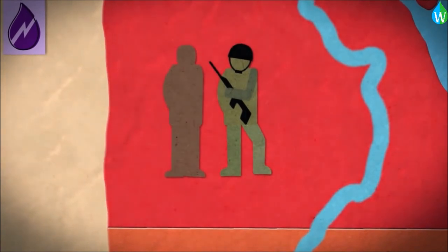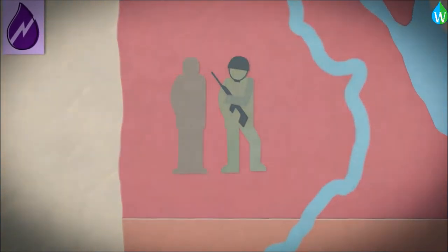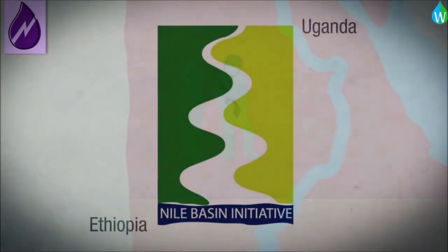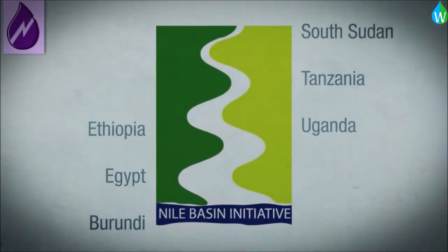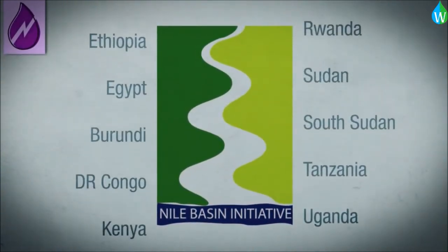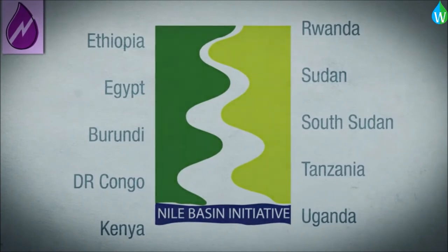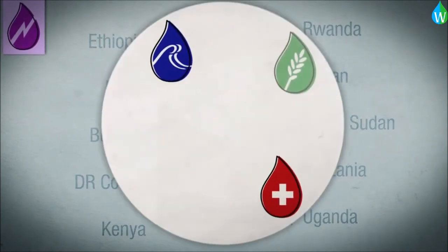However, the example of the Nile conflict also shows opportunities for international cooperation in the water sector. The countries along the river have formed the Nile Basin Initiative in order to find ways to organize the use of its water without conflict.